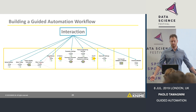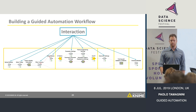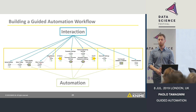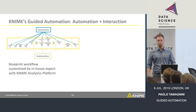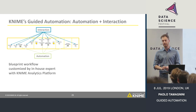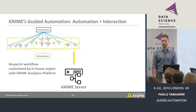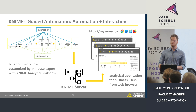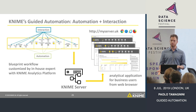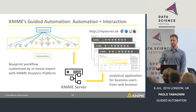We are going to show you live how this works. Some parts are automated — it's this balance between interaction points and automation. You have this blueprint workflow taken by the in-house expert of the company, who customizes it to the needs of the company. Then they deploy it on the KNIME server, and any business user can remotely access it from any web browser, type in a domain, interact with it, and train machine learning models on the fly.